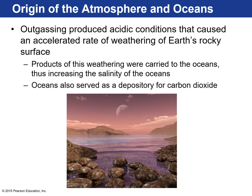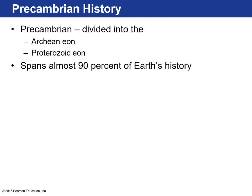The initial outgassing of our atmosphere produced a lot of acidic conditions, which accelerated the weathering of rocks at Earth's surface. All those weathering products were brought to the low-lying areas where the water was — and that's why our oceans are salty.